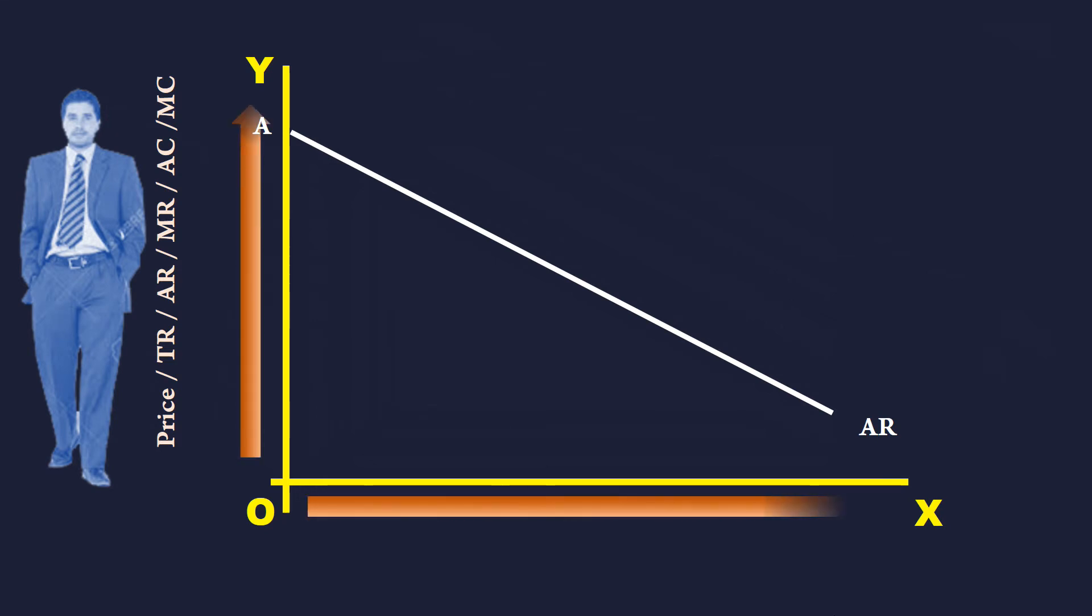He does it judiciously. In the absence of cost, whatever he earns is his profit. His profit is nothing but revenue. Then, he will fix the price and output in such a way that maximizes his total revenue.